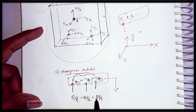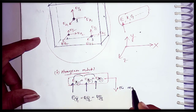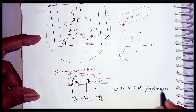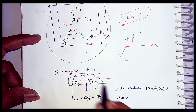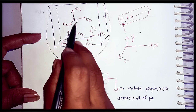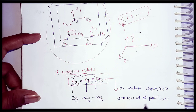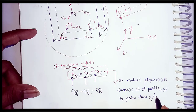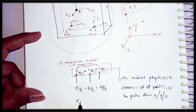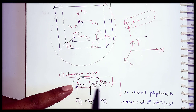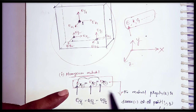The definition of homogeneous material: the material property is the same at all points — points 1, 2, and 3 — in a particular direction, whether that is the x-direction, y-direction, or z-direction. We can also write Ez1 = Ez2 = Ez3. In other words, whatever the material property may be, it is the same at all points in a single particular direction.